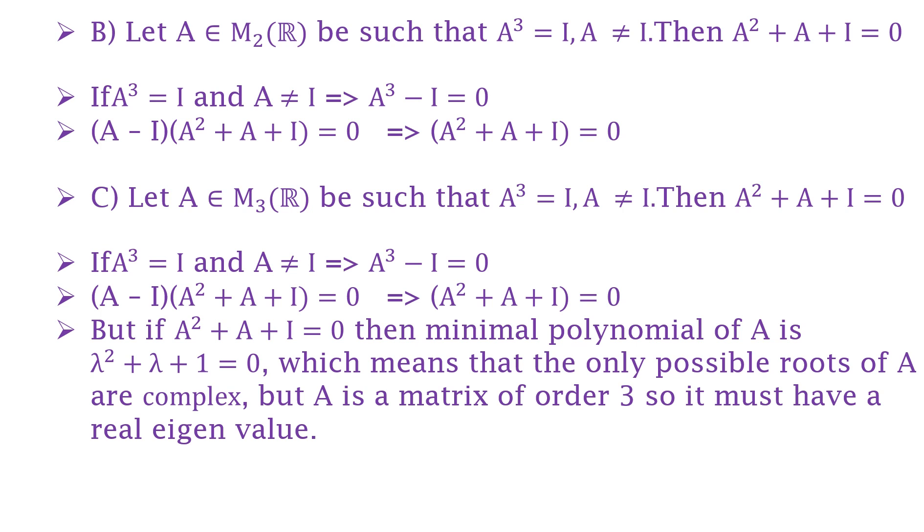It means that the only possible roots of A are complex. But here A belongs to a matrix of order 3, so it has 3 eigenvalues, so it must have real eigenvalues. Therefore option C is not correct.